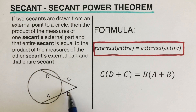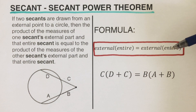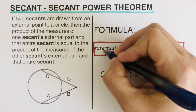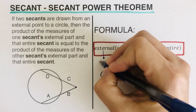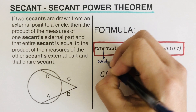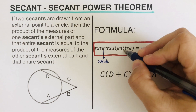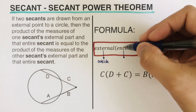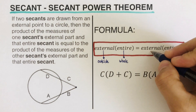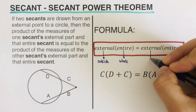To better understand this, I wrote the formula up here in words. When we say 'external' we refer to the outside length, and when we say 'entire' that means the whole thing. So again: external means the outside, while entire means the whole thing.